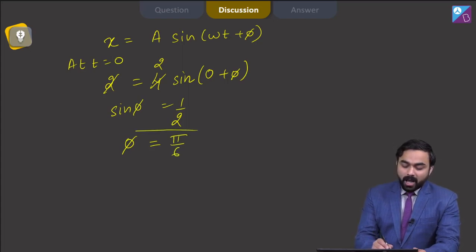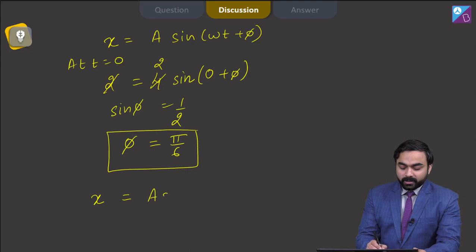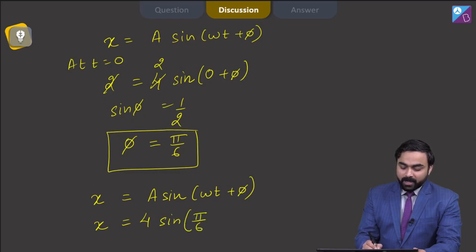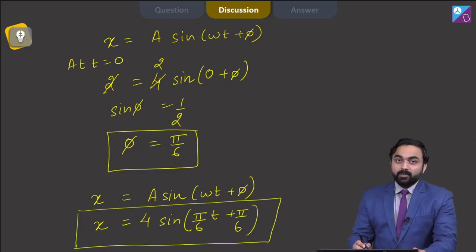Now I have the value of initial phase, I have the value of angular frequency, I can simply substitute it in standard equation of SHM for this particular graph between position and time and I will be having x is equal to 4 sin pi by 6 t plus pi by 6. So this is the correct equation for the particle performing SHM according to the graph given in the question.